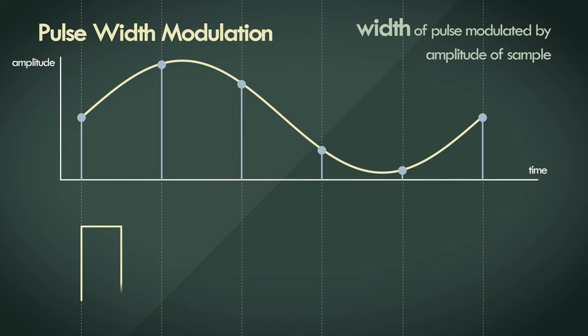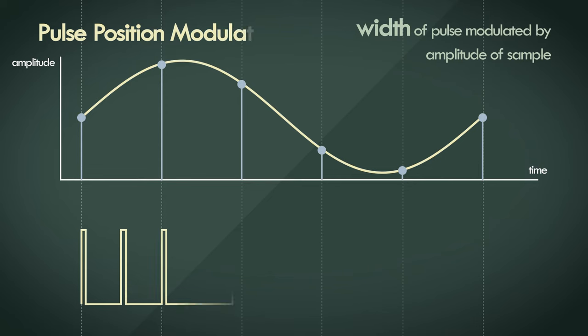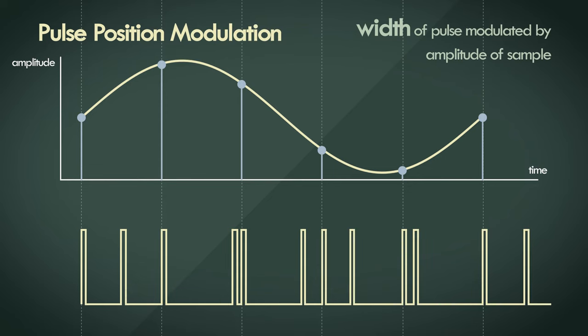Another modulation technique which is quite similar is pulse position modulation, where a sharp pulse is triggered at the start of the sampling interval, and a secondary pulse is triggered at a position which corresponds to the relative amplitude of the sample. So in this case, the larger the sample amplitude, the further away is the secondary pulse from the initial pulse.